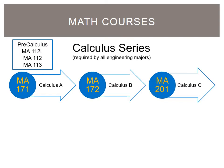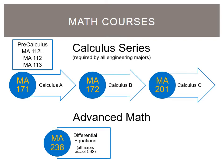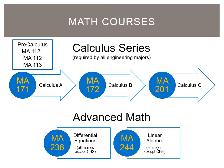Pre-Calculus classes do not satisfy degree requirements. After completing the Calculus series, most engineering majors require the advanced math series of MA 238 differential equations and MA 244 linear algebra. The cybersecurity engineering major only requires linear algebra, while chemical engineering only requires differential equations. Most engineering students will finish all required math courses by the end of their sophomore year.